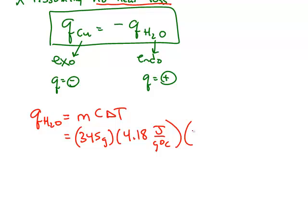And the change in temperature of the water, it ended at 28.6 and it started at 25 degrees. So Q for the water is 5191.56 joules.